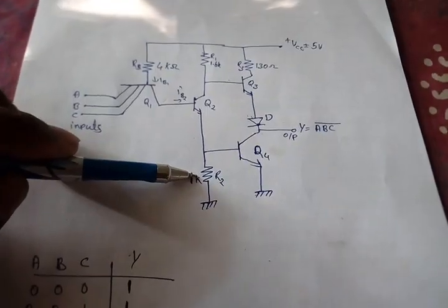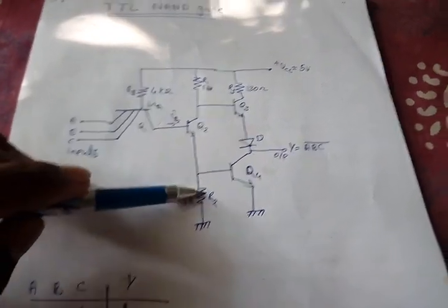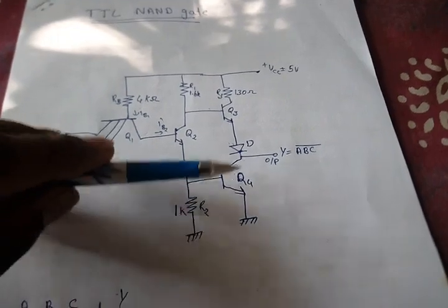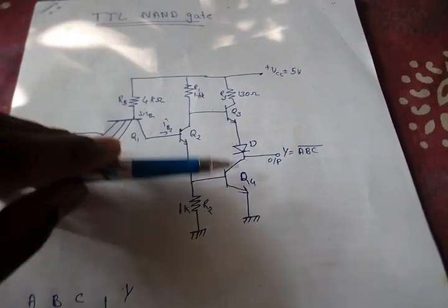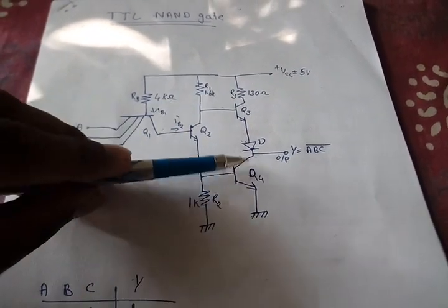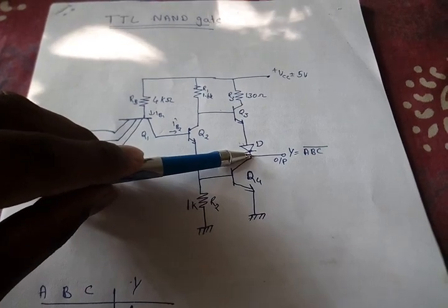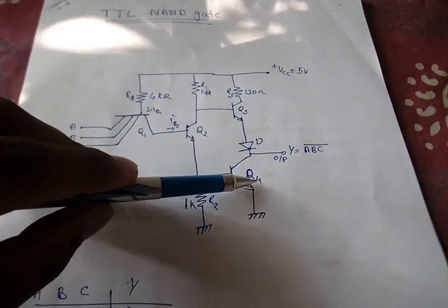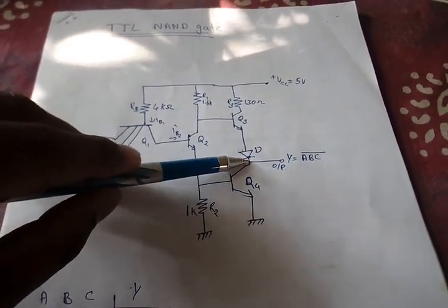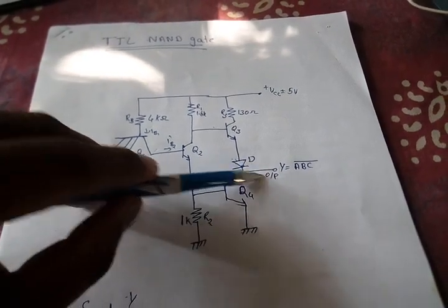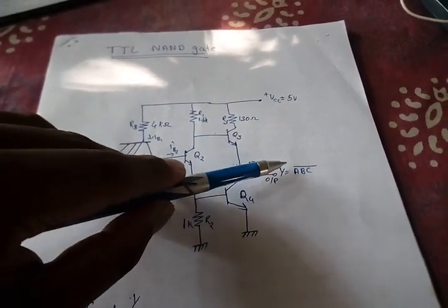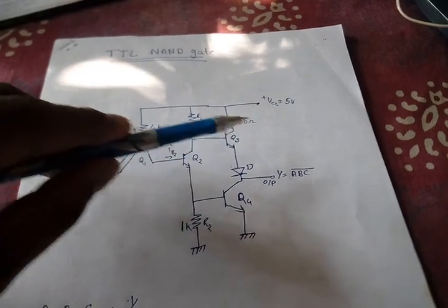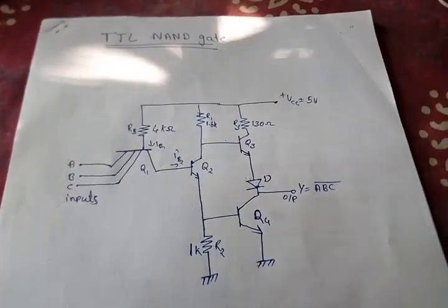Then, the drop across R2 will be sufficient to switch on the transistor Q4. Thus, the current will pass to the emitter and the current will not pass to the output. Then Y will be equal to zero. That is this case. This is the basic working of DTL NAND gate.